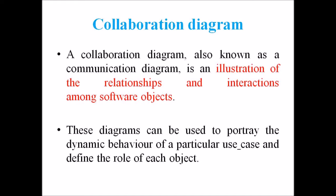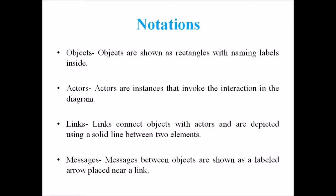Next we are dealing with the different notations of a collaboration diagram. The first notation is the object. The representation of an object is done by an object symbol with its name and the class underlined, separated by a colon. The object is represented by specifying their name and class. It is not mandatory for every class to appear. A class may constitute more than one object. Firstly the object is created, then its class is specified, and finally, to differentiate one object from another, it is necessary to name them.